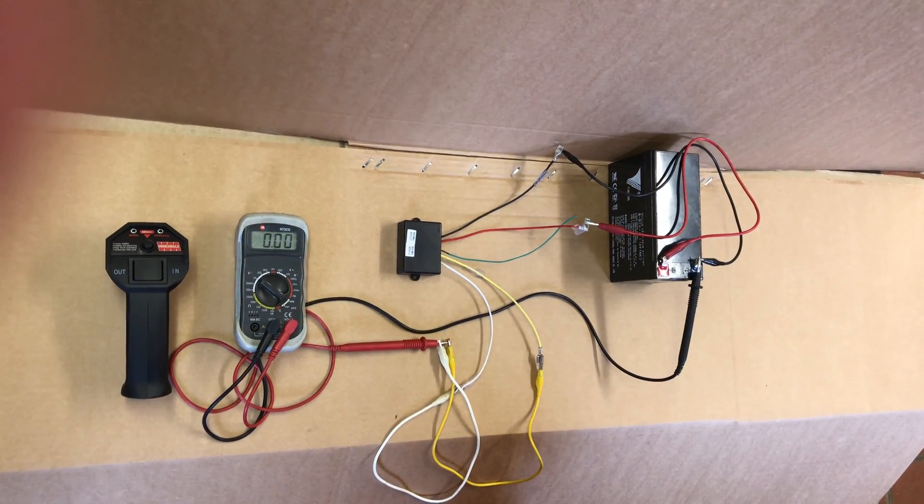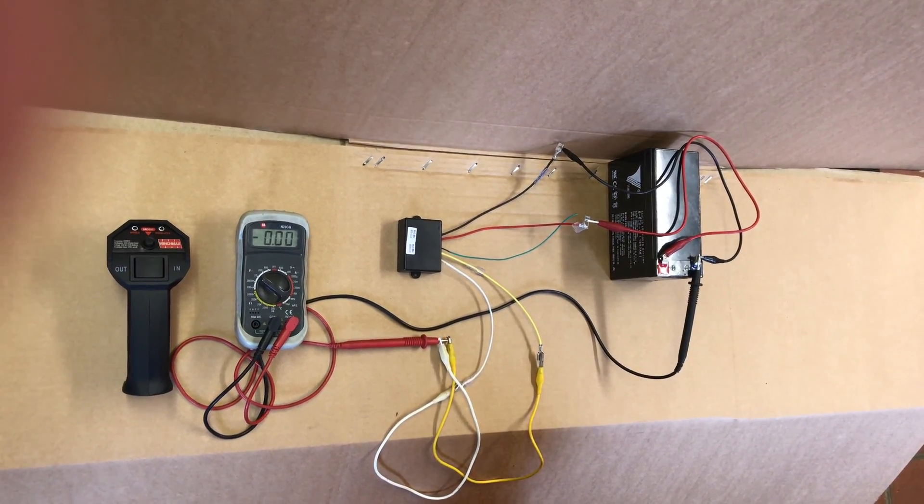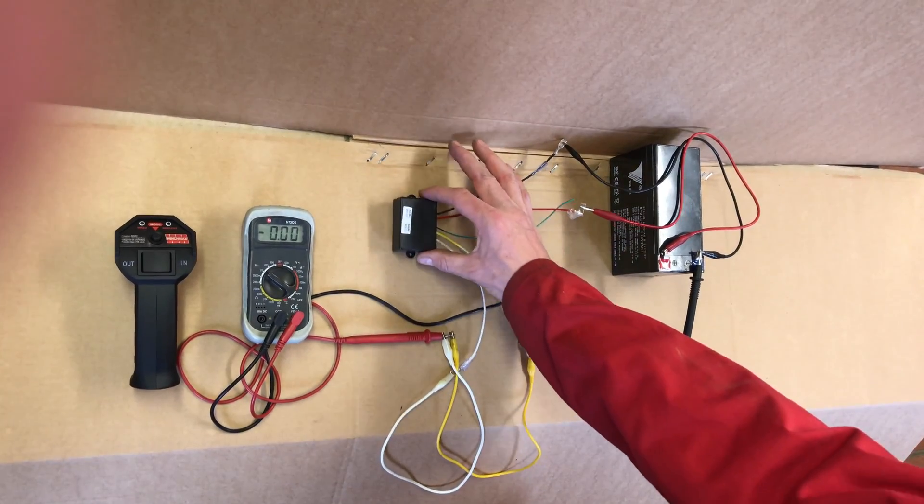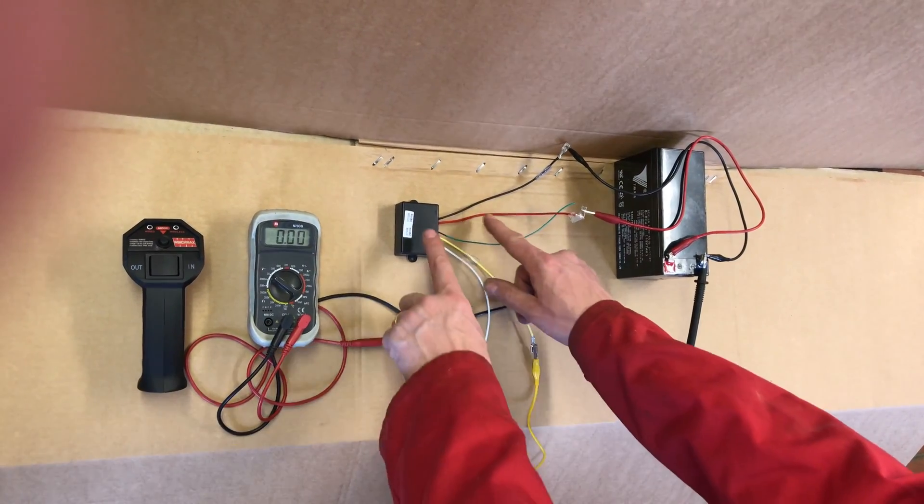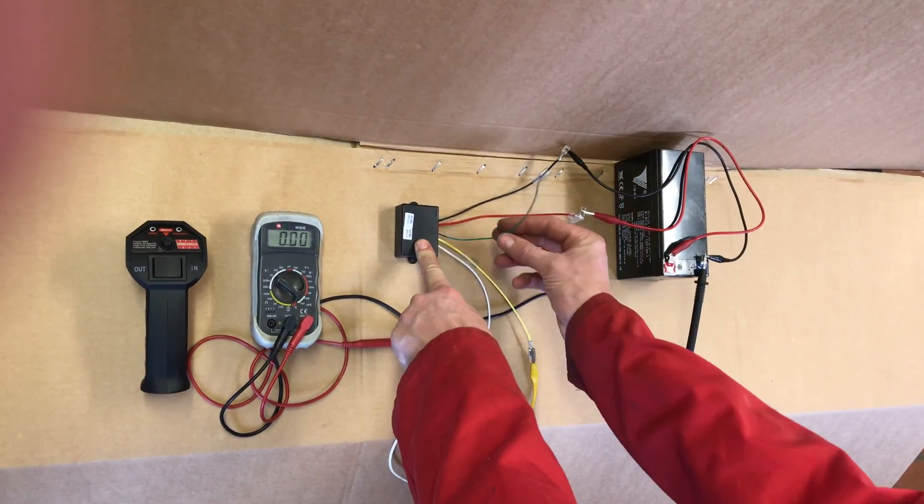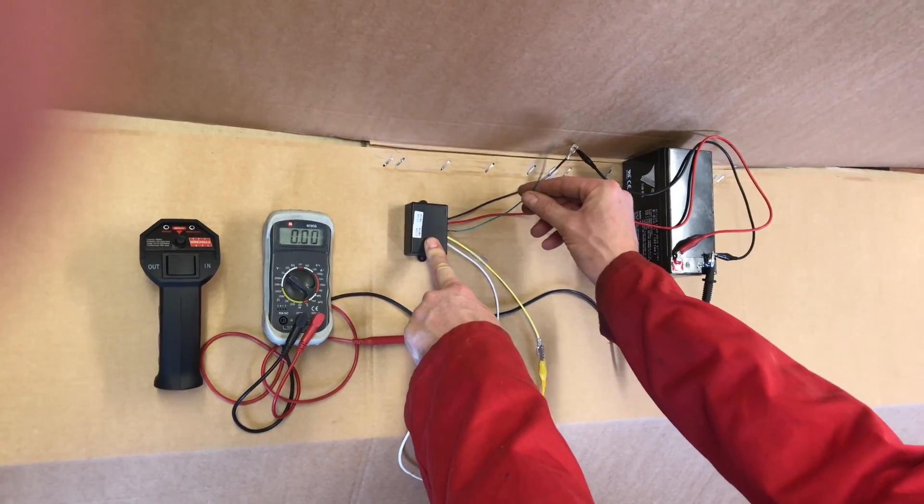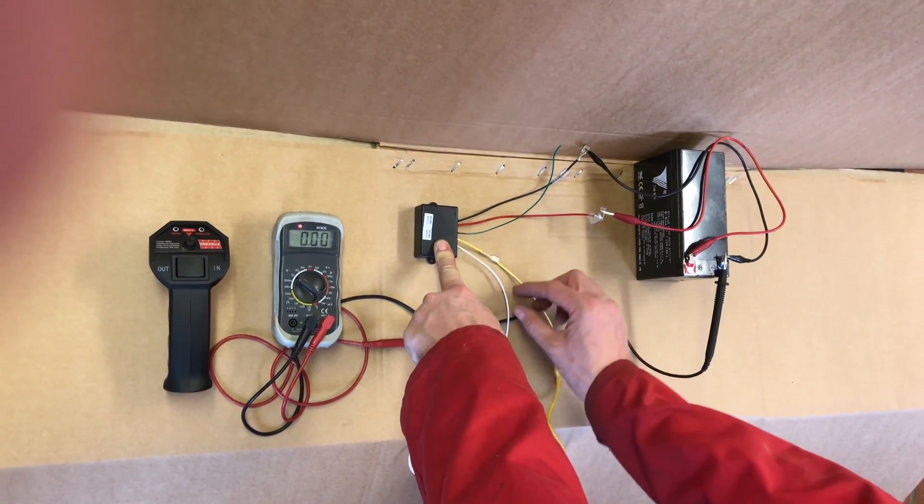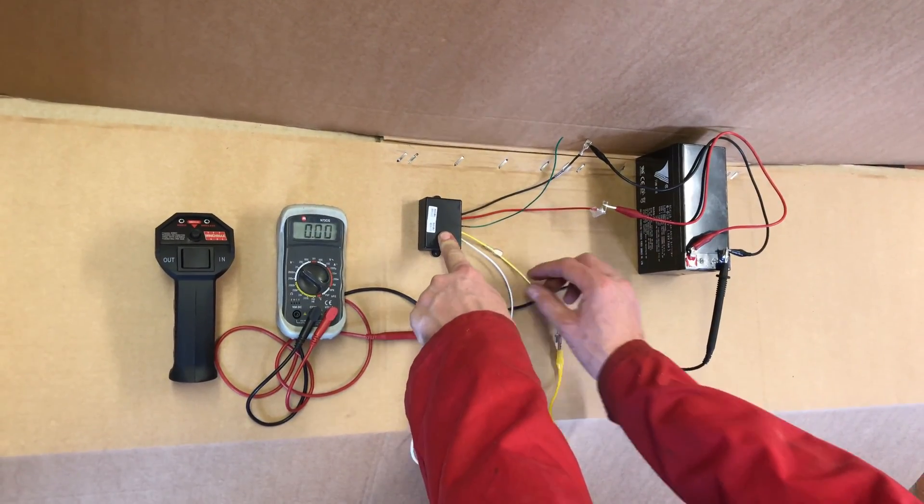Here we've got a setup just to test the wireless remote control. This is the receiver. The receiver has a power feed to it - the red is the positive, the black is the negative, the green is not connected, that's an antenna wire, and then the two other wires which are the yellow and the white are the trigger wires.